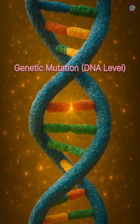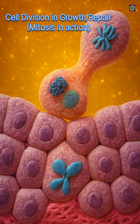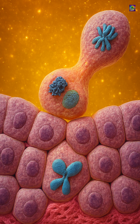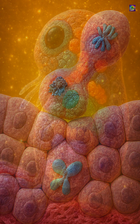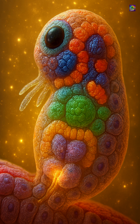Evolutionarily, cell division is essential for life's continuity. Mitosis preserves stability within an organism, while meiosis generates variation, fueling natural selection and adaptation. Without these processes, multicellular life, sexual reproduction, and evolution as we know it would not exist, highlighting how fundamental and tightly regulated cell division is to biology.